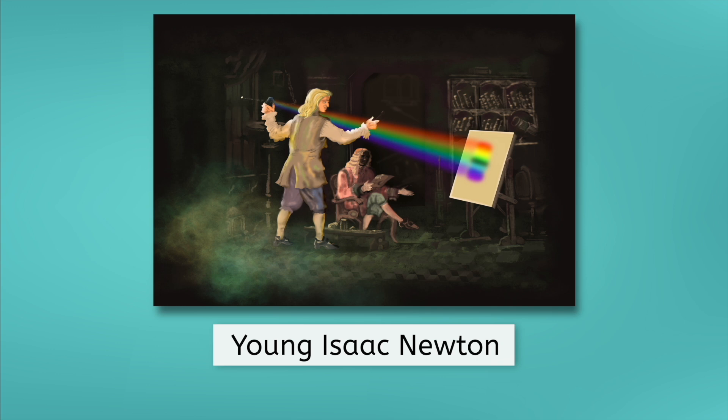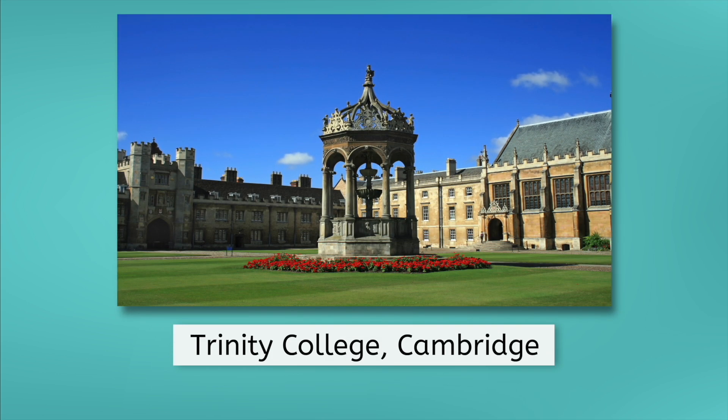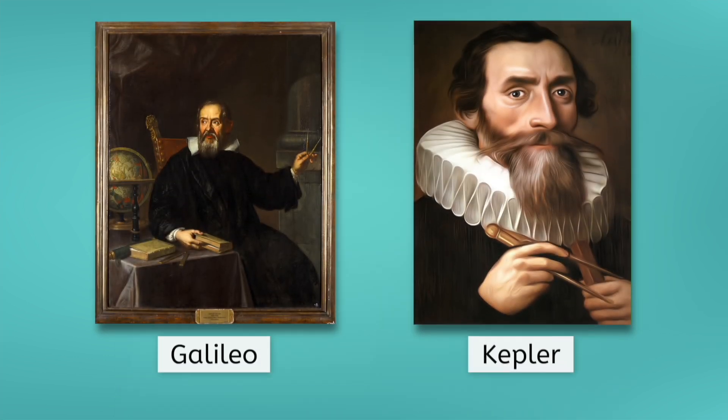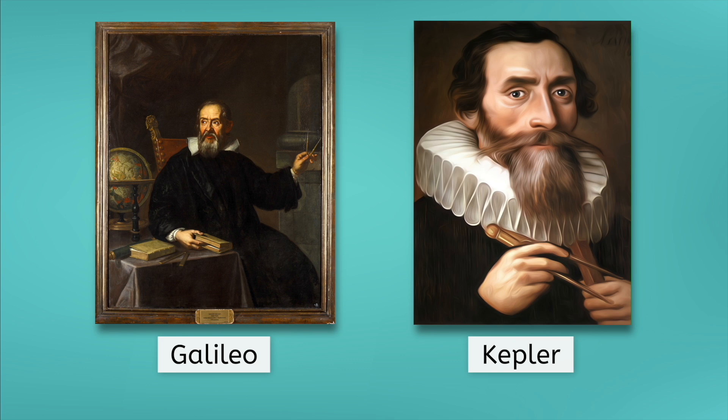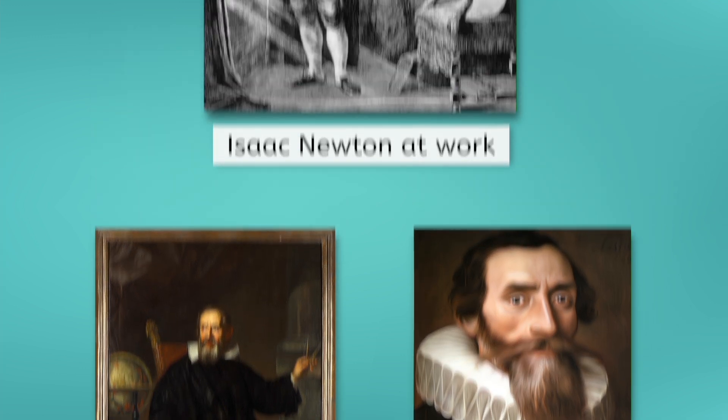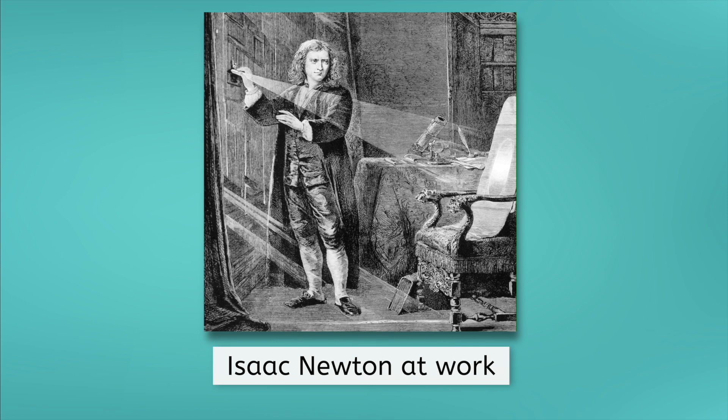In 1661, Newton began studying at Trinity College, Cambridge, where he became interested in optics and the work of other scientists, including Galileo Galilei and Johannes Kepler. He graduated in 1665 and returned to his family's estate in Woolsthorpe, where he began his scientific research in earnest.